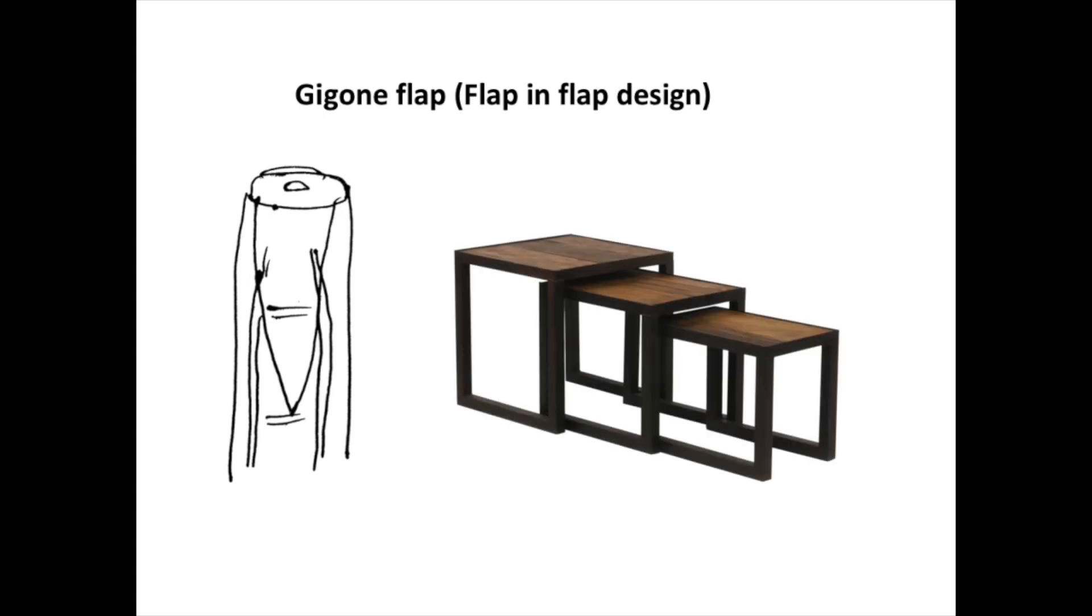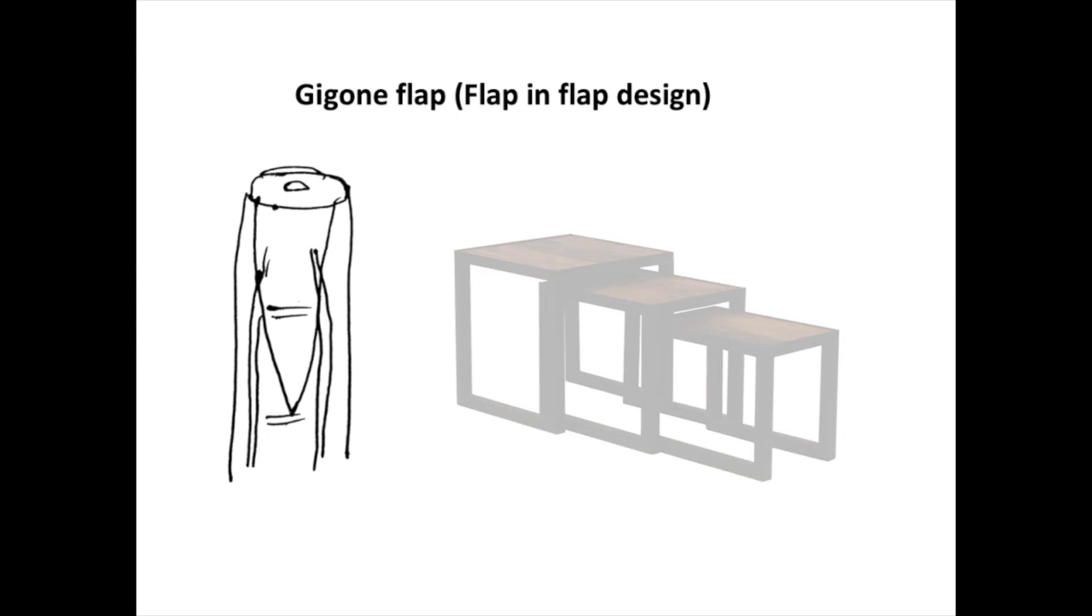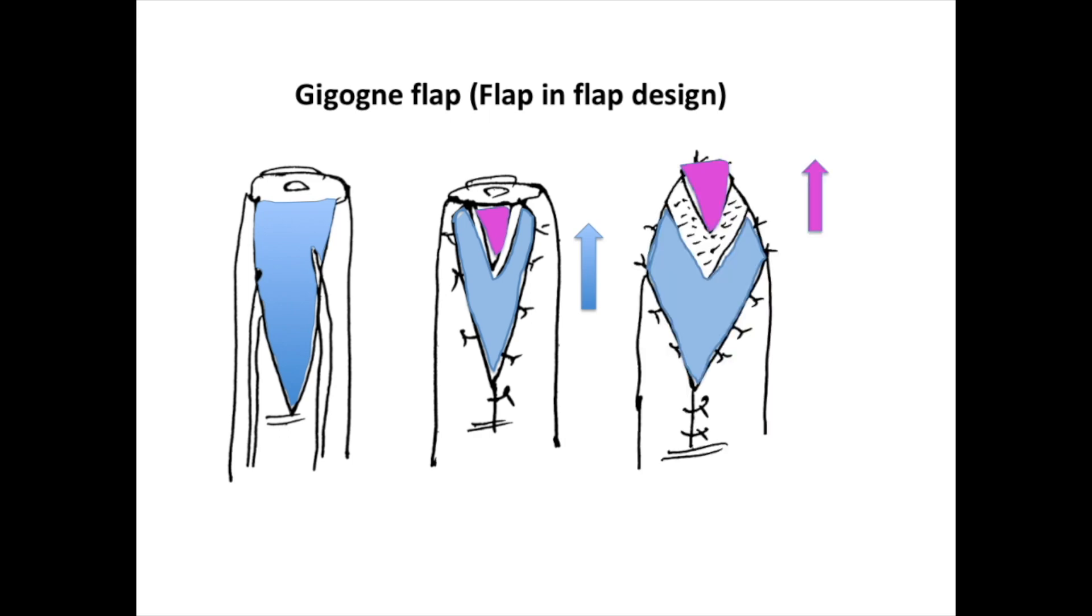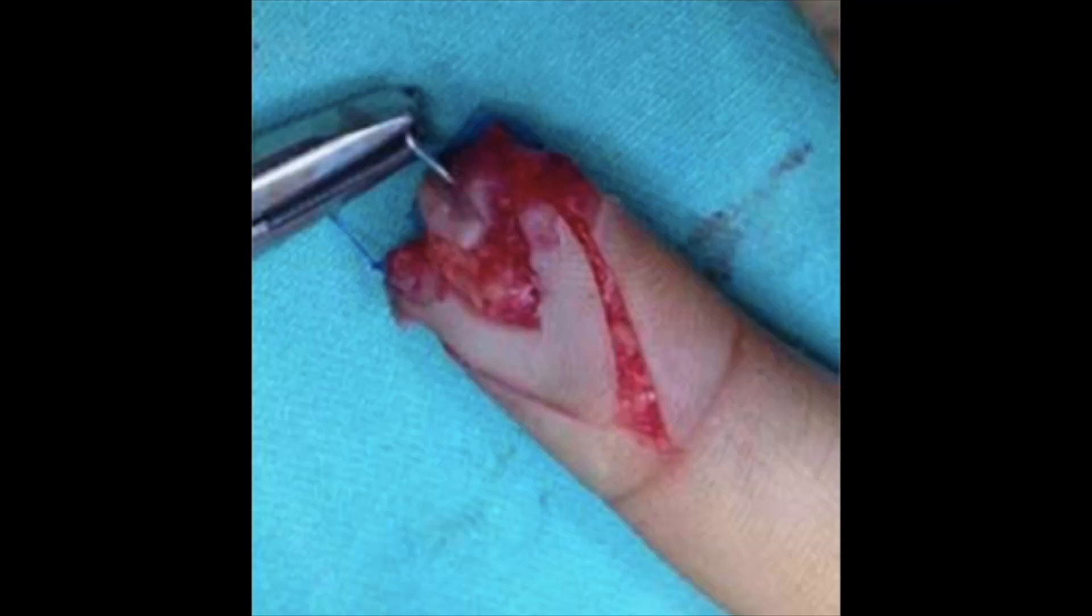The next modification of the V-Y advancement flap for the fingertip is the Gigon flap, which is a French word which denotes one within the other, like this set of tables. The first flap, that is the blue colored flap, is first raised, and within this flap another V-Y advancement flap is raised. This flap has its own movement as shown by the blue colored arrow. Now another V-Y advancement flap is raised within this blue colored flap, and this flap has an advancement as shown by the pink colored arrow. This is a clinical example of the Gigon flap.